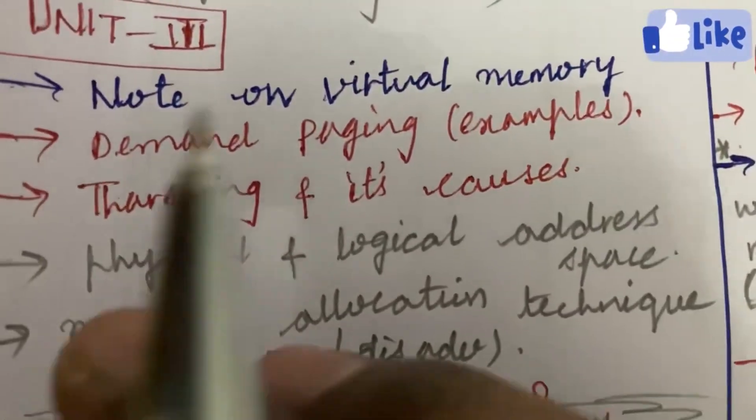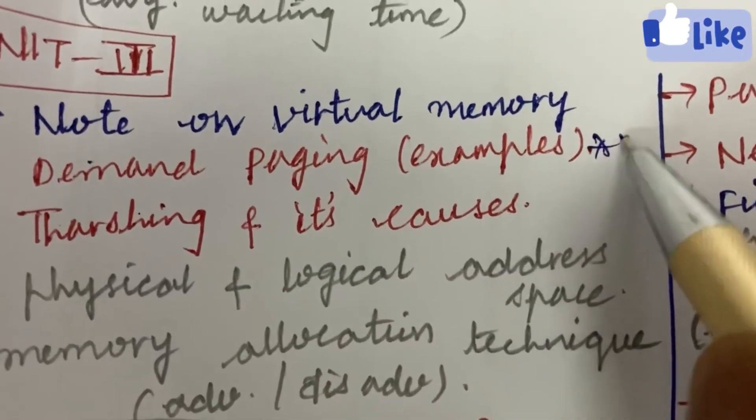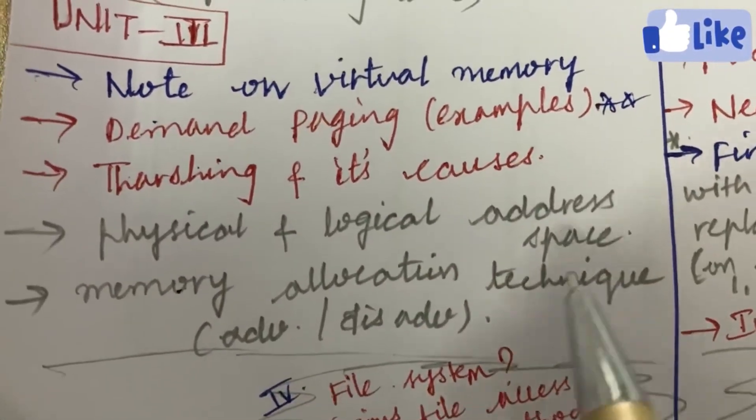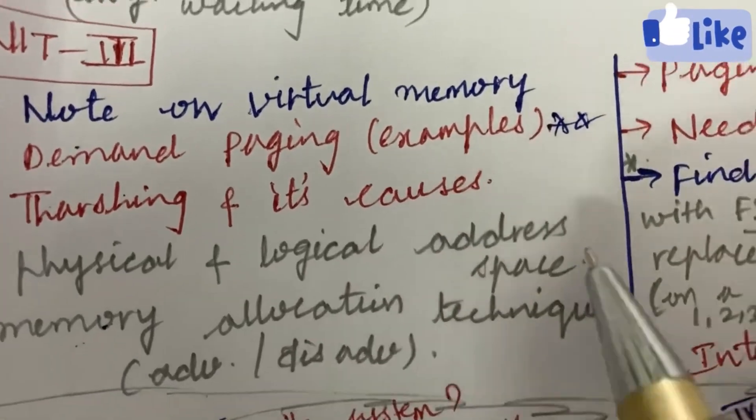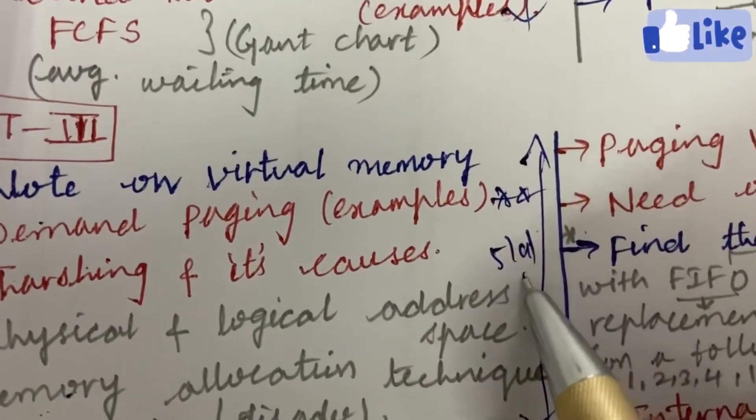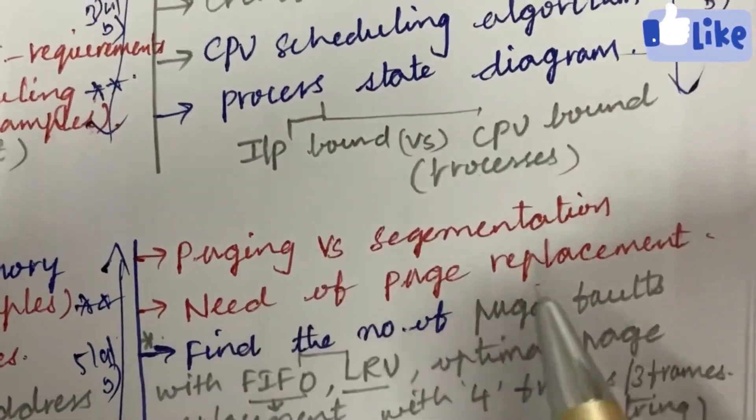Let's look at Unit 3. Unit 3 is also very important: note on virtual memory and demand paging with examples, thrashing and its process, physical and logical address space, memory allocation technique, advantages and disadvantages. From this part you can expect 5a as well as 5b. Explain the differences between paging and segmentation and need of paging replacement.